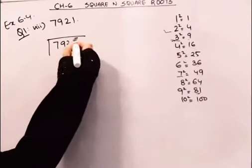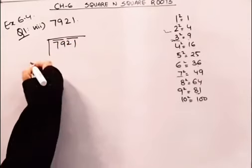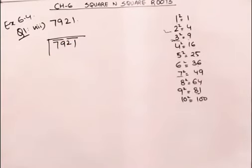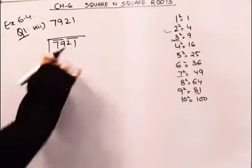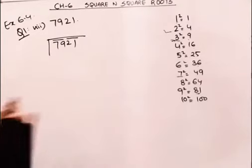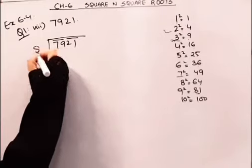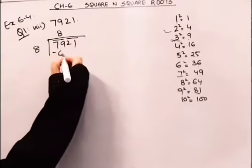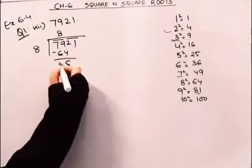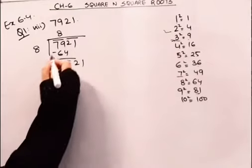Then do pe baar. Agar haom 9 ka square lete, 9 nines are 81, that is greater than 79. So we take 8. 8 eights are 64. We'll get 51 here, 21.